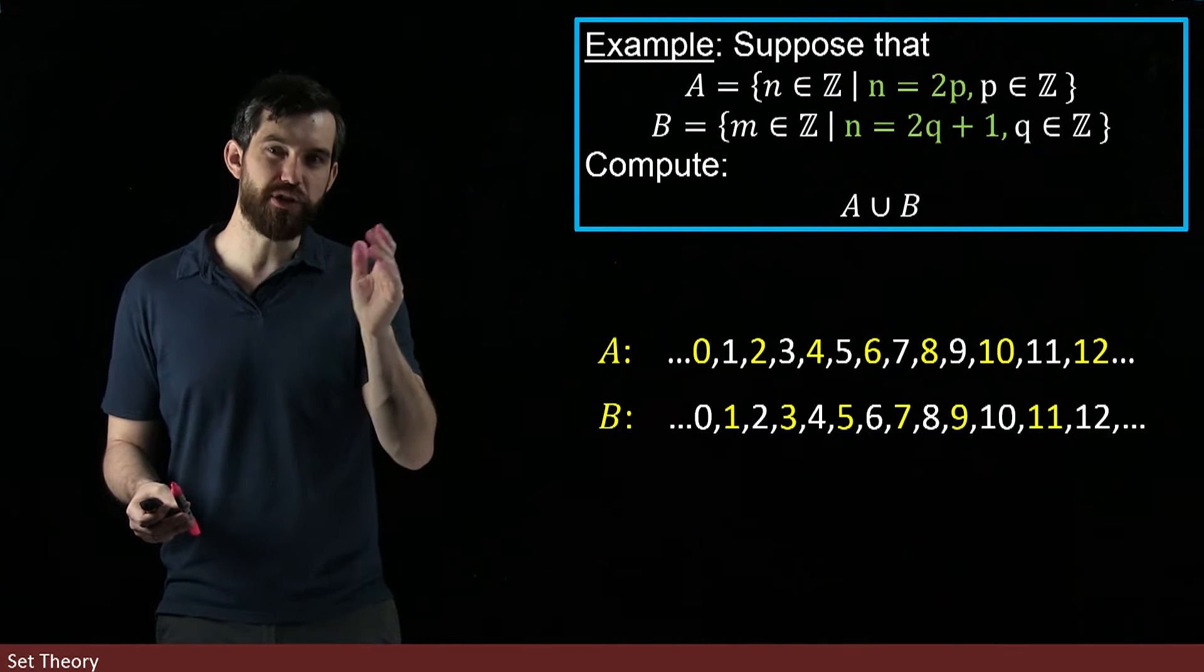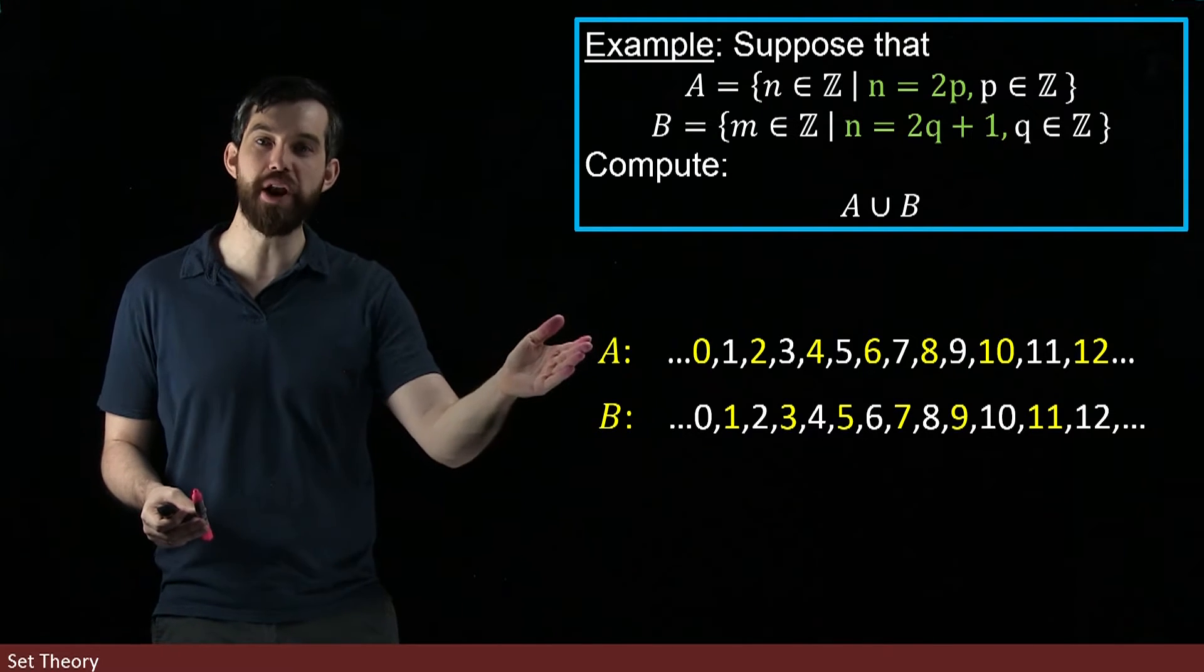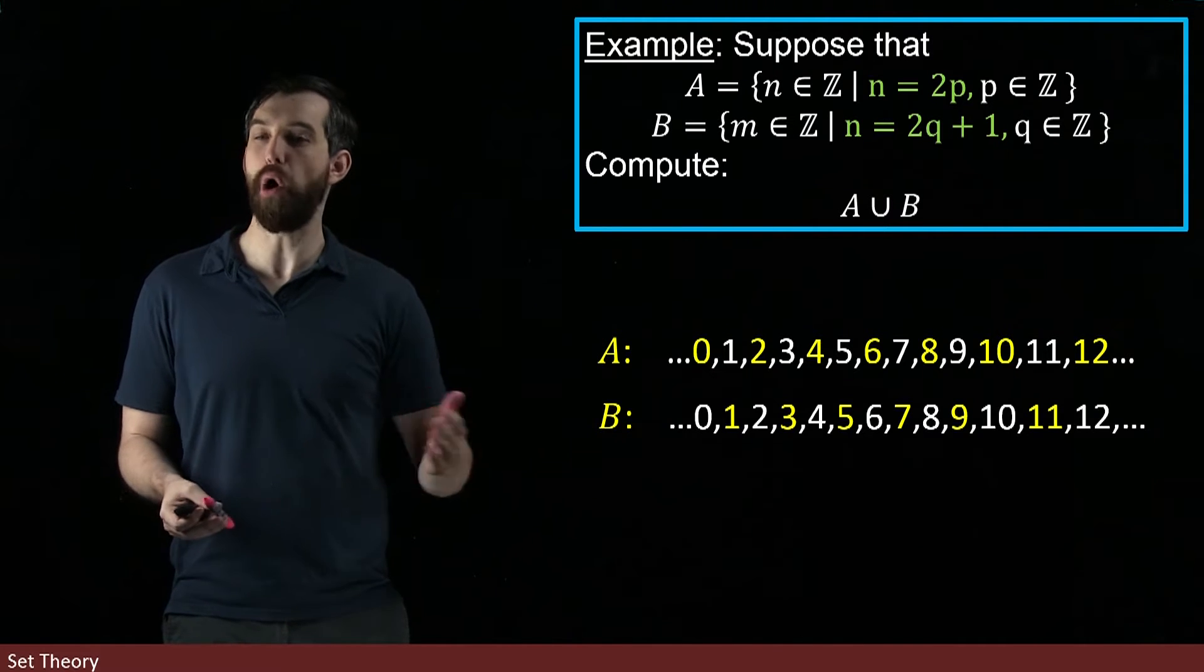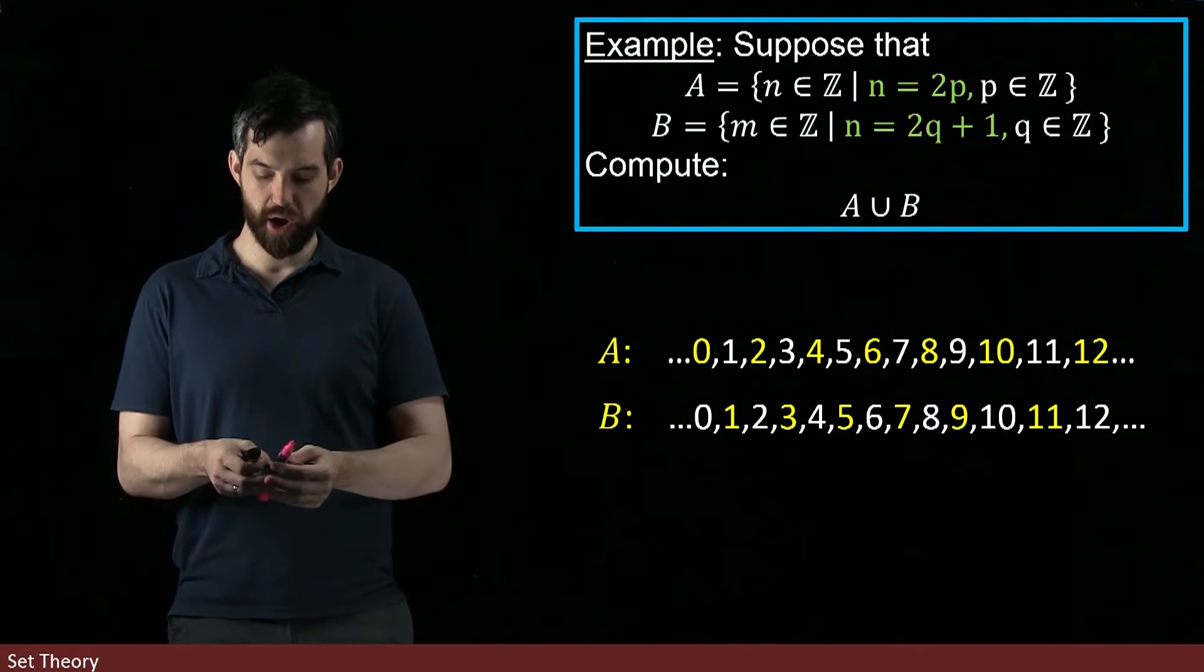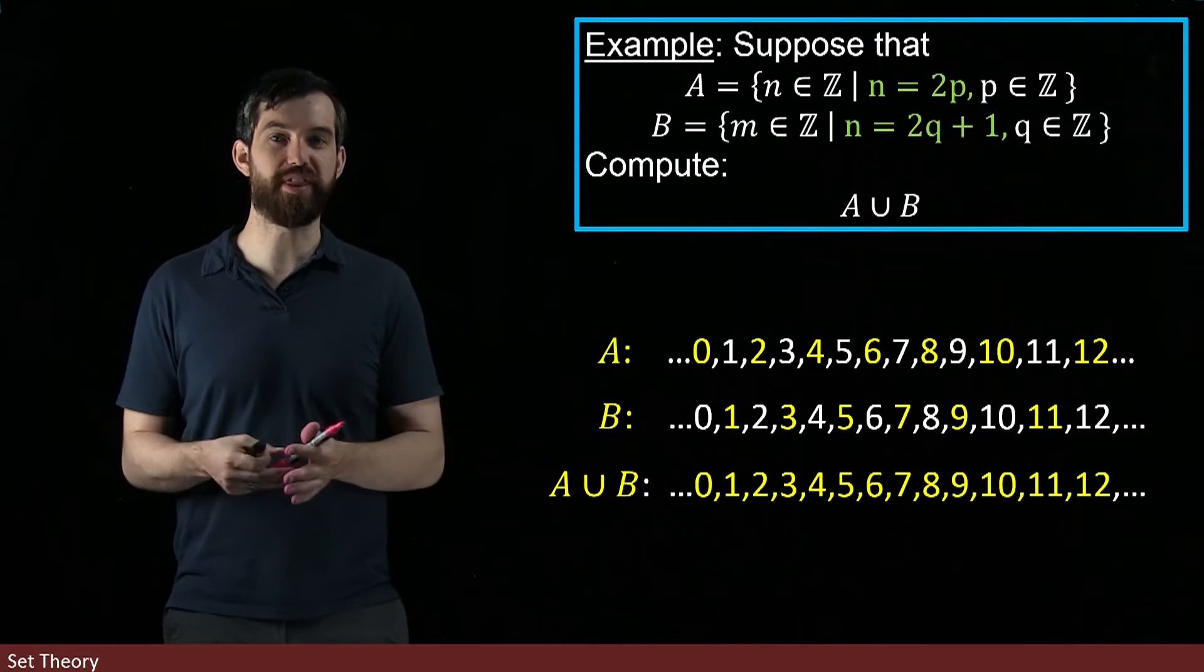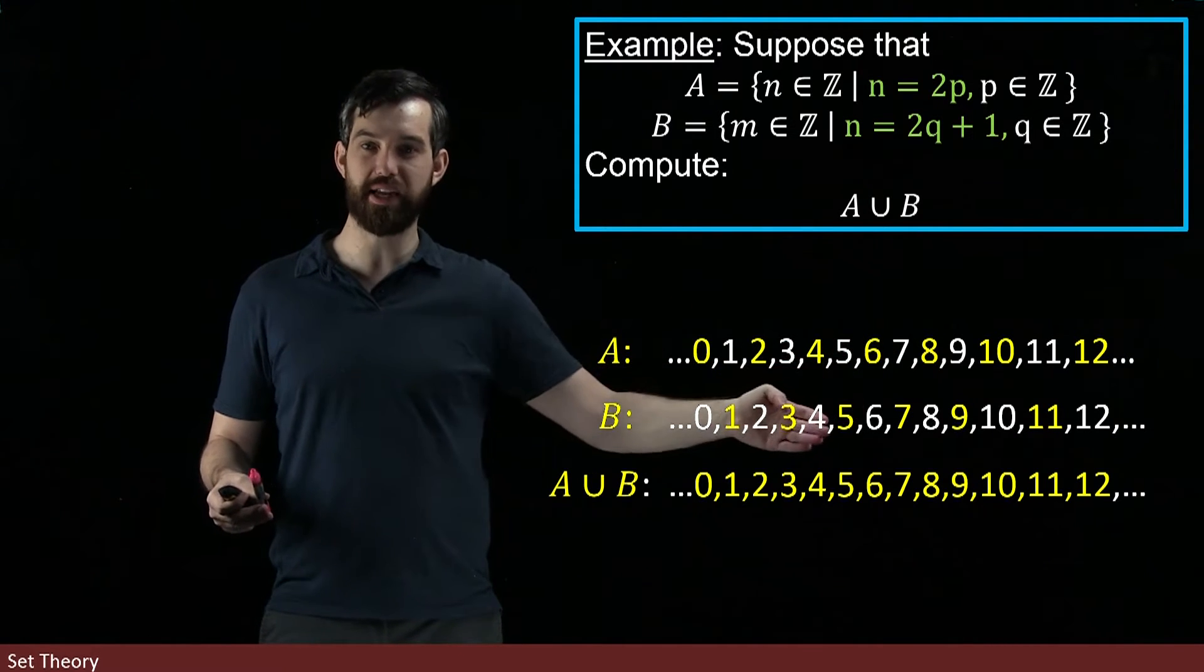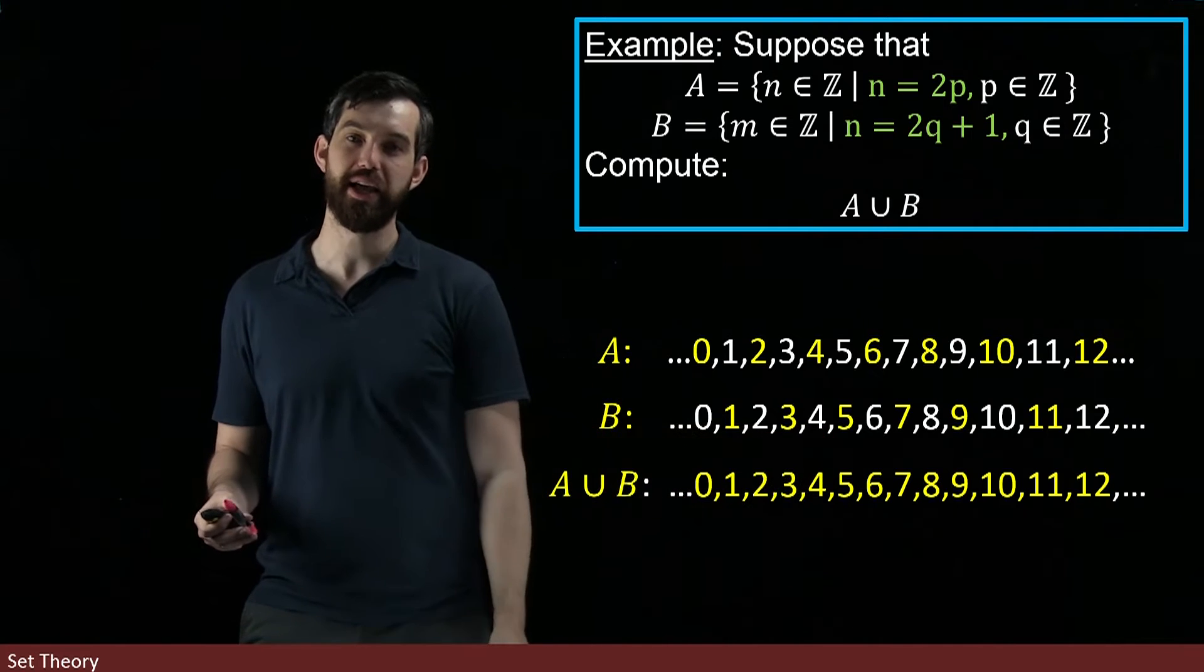And then if I think about what A ∪ B does, it says it's in the one or the other. So I want to look at and highlight all of the ones that are in either A or B. But this is everything. All of the evens are highlighted here, all of the odds are highlighted here, so everything gets highlighted in the union.